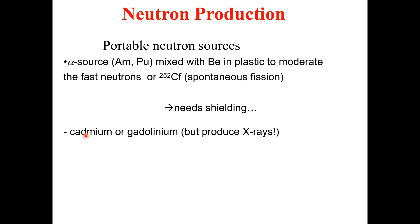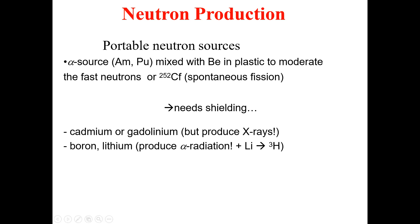As a portable source, we can utilize cadmium or gadolinium, but these kinds of sources can also produce X-rays, which one might consider a drawback. We can also utilize boron and lithium as portable neutron sources. Lithium produces alpha radiations. Just like alpha sources, this kind of reaction also requires shielding in order to be performed in a protective environment.